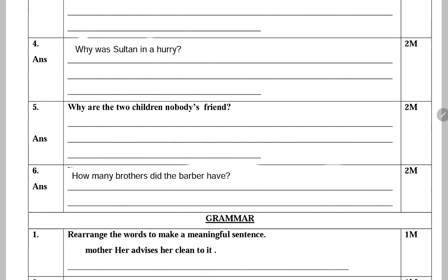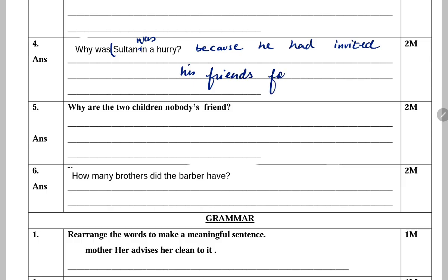Next: Why was Sultan in a hurry? Sultan ko itni jaldi kyun thi? Kyunki usne apne kuch friends ko invite kiya hua tha lunch ke liye. So, the sultan was in a hurry because he had invited his friends for a feast at noon.